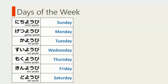Saturday is 土曜日。 You might have noticed that all the days of the week in Japanese end with 曜日, just like all the days of the week in English end with 'day'. So one way to memorize days of the week is to memorize the part before 曜日 with a rhythm.